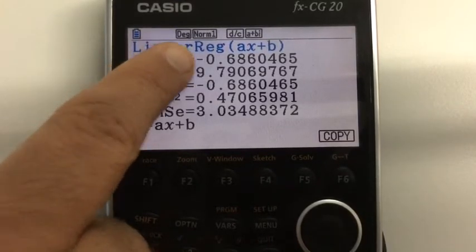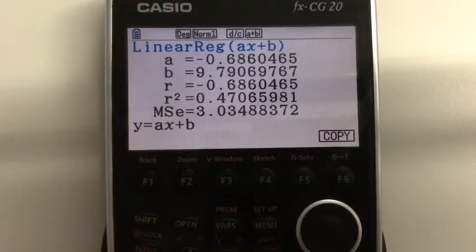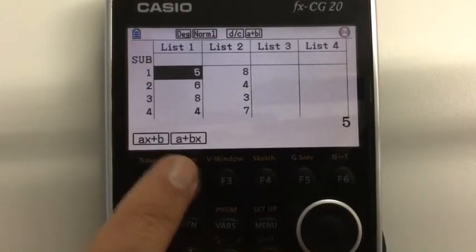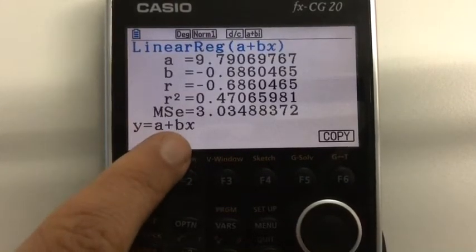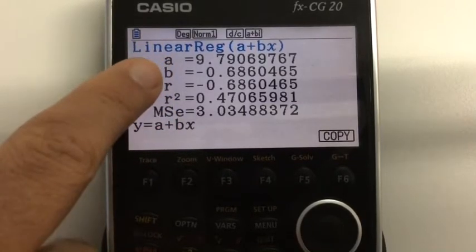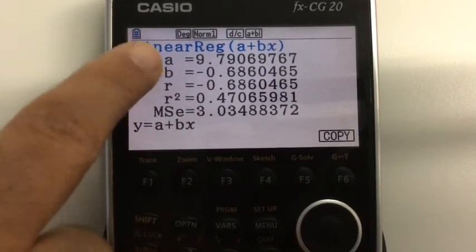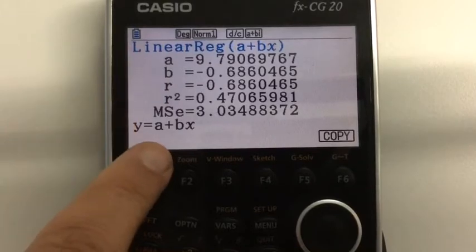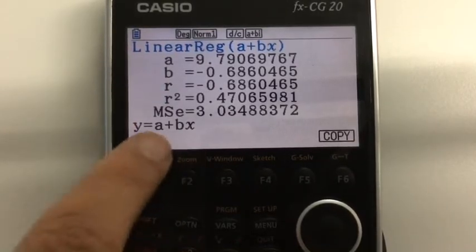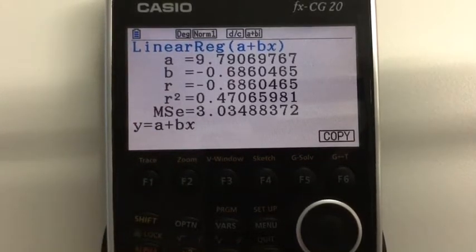Now we've got minus 0.68 and 9.79. Just to show you, if I press exit and we press the other one, we've got A plus BX. Now we've still got the same values, you notice, just now they've swapped over, they're the other way around. So it doesn't matter which one we press, as long as we remember to look down there to find out what format we have put it in for the equation of our regression line.